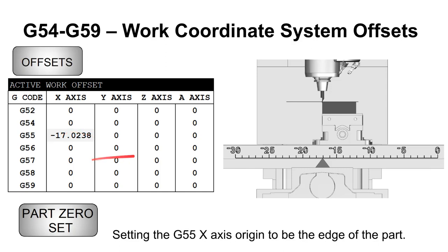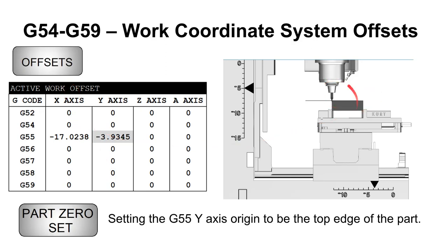You don't strictly need to pay attention to these numbers, but I think it's important to understand why a value like negative 17-something is in there. If we used the other side of the block as the X-axis origin, the table would be slid over and we'd have something like negative 13 as the value. Then for the Y-axis, we find the Y-axis origin by touching off with the edge finder and again on the offset screen, highlight the Y-axis on G55 and press Part Zero Set.